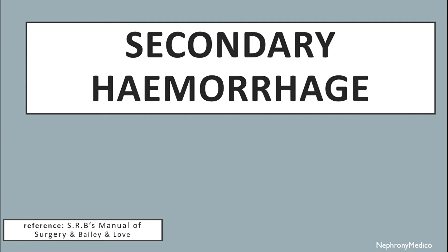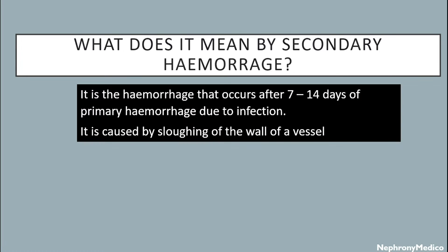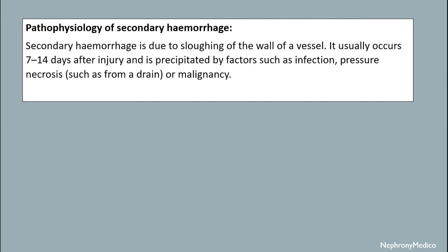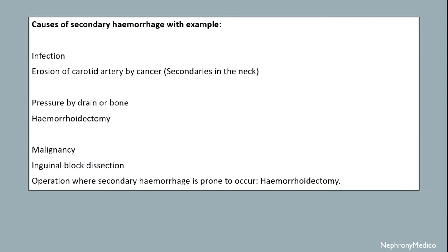Hello and welcome. Let's talk about secondary hemorrhage. Secondary hemorrhage is the hemorrhage that occurs after 7 to 14 days of primary hemorrhage, due to infection. It is caused by sloughing of the wall of a vessel. Pathophysiology: secondary hemorrhage is due to sloughing of the wall of a vessel, and usually occurs 7 to 14 days after injury, precipitated by factors such as infection, pressure necrosis, or malignancy.